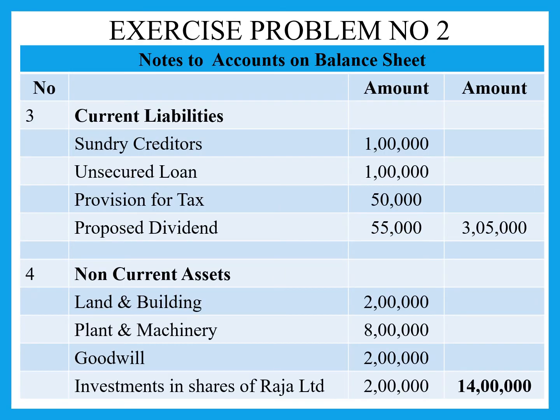The third title is current liabilities. Sundry creditors comes under current liabilities, that is 1 lakh rupees. Regarding the unsecured loan — since we don't know whether it will come or not, and it has been settled within the year, the liability is closed. Therefore, it is not placed under current liabilities. Provision for tax is 50,000 rupees.